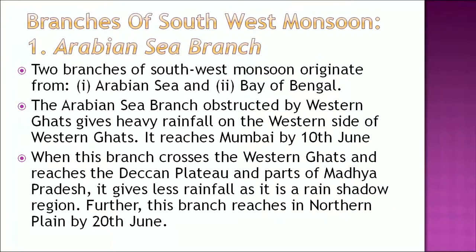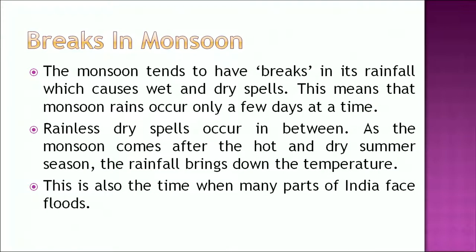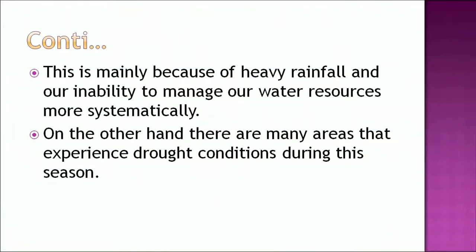The Bay of Bengal branch moves from the Bay of Bengal, strikes the Andaman and Nicobar Islands, the north-eastern states, and coastal areas of West Bengal, and covers the whole of India by July 15th. However, the quantity of rainfall decreases as winds move westward over the northern plains — for example, rainfall at Kolkata is 120 cm, Allahabad 91 cm, and Delhi 56 cm. The monsoon tends to have breaks in its rainfall, causing wet and dry spells. As the monsoon follows the hot dry summer, rainfall brings down the temperature. This is also the time when many parts of India face floods due to heavy rainfall and inability to manage water resources, while other areas experience drought conditions.